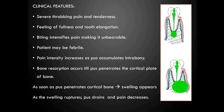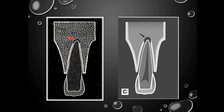The clinical features of acute apical abscess are severe throbbing pain and tenderness, feeling of fullness and tooth elongation due to collection of pus. Biting intensifies the pain, making it unbearable. The patient may have fever and feel febrile. Pain intensity increases as pus accumulates intrabonally; as pressure increases, bone resorption occurs until pus penetrates the cortical plate, at which point swelling appears.